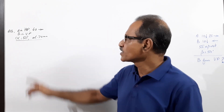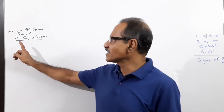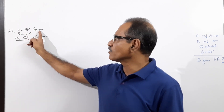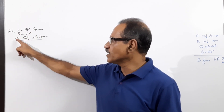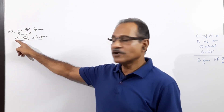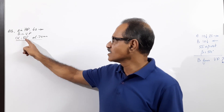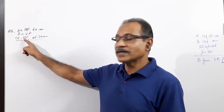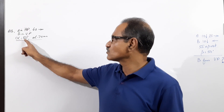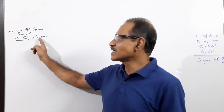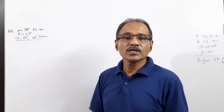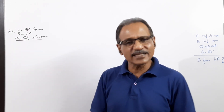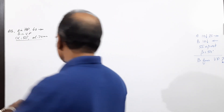The first question on lines is: Line AB — A is in HP, 40mm in front of VP; B is in VP; the front view makes 50 degrees to XY line, so alpha equals 50 degrees; the length of the elevation is 70mm. You are simply asked to draw the projections.